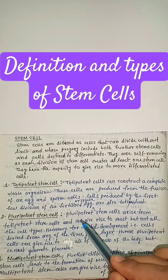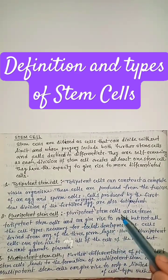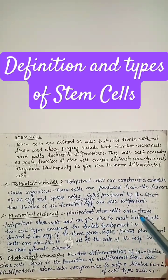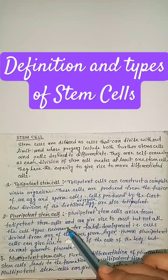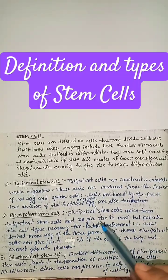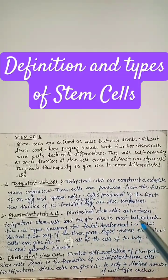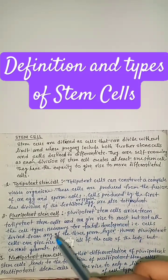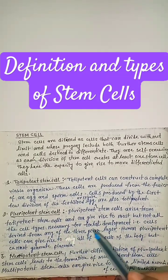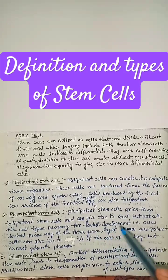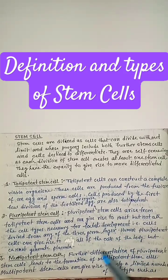Pluripotent stem cell. Pluripotent stem cells arise from totipotent stem cells and can give rise to most but not all cell types necessary for total development.